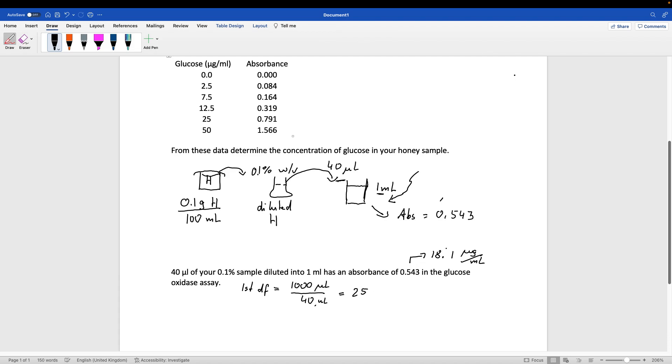So this 18.1 microgram per milliliter is basically a 25-fold dilution of what we have in the diluted honey. So we can very easily calculate that the concentration in the diluted honey. That would be just simply 25, namely our dilution factor, times 18 point...